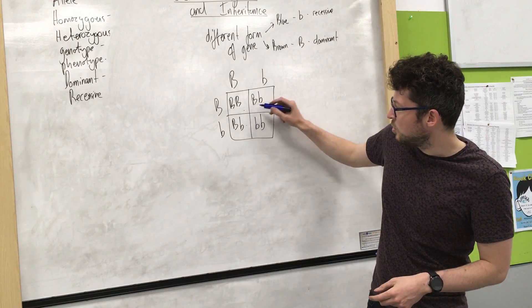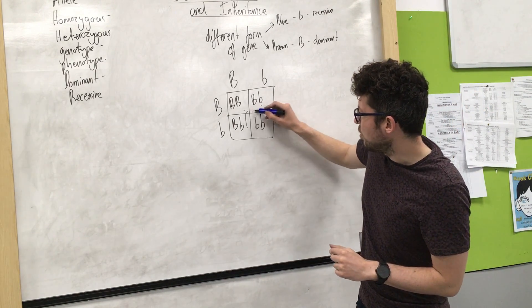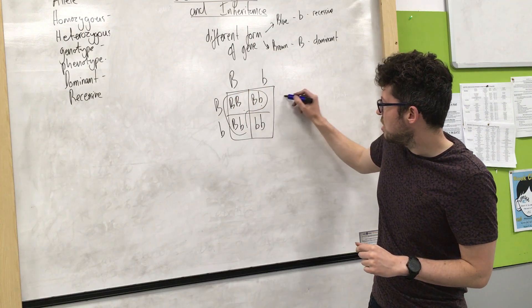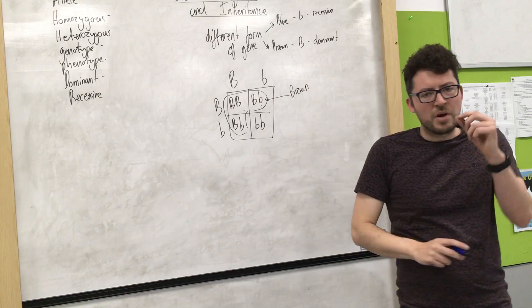So this one this one and this one would all have brown eyes because brown is dominant over blue. So they would all have brown eyes.